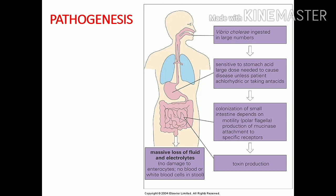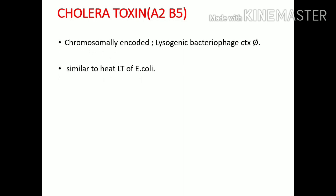We get cholera when Vibrio cholerae is ingested in large numbers — more than 10 to the power 8 bacilli — through contaminated water or food. A large dose is needed to counteract the stomach acid. Patients taking antacids or those with achlorhydria have low acid levels, so even a low dose can cause disease. Once they enter, they colonize the small intestine, attach to specific receptors, produce certain toxins, and cause massive loss of fluid and electrolyte imbalance.